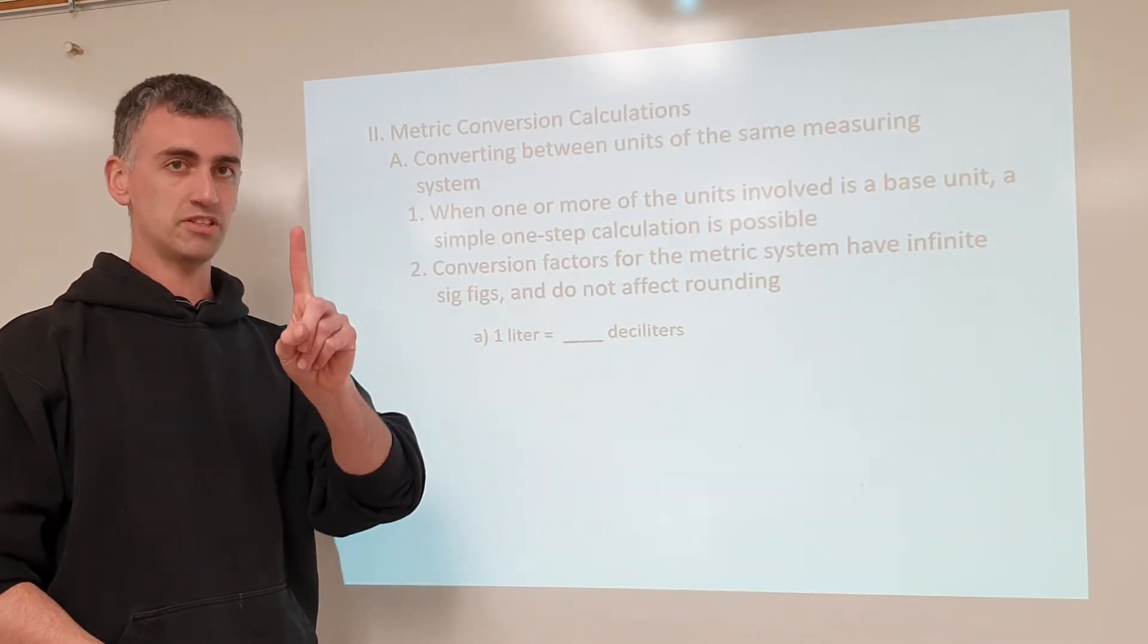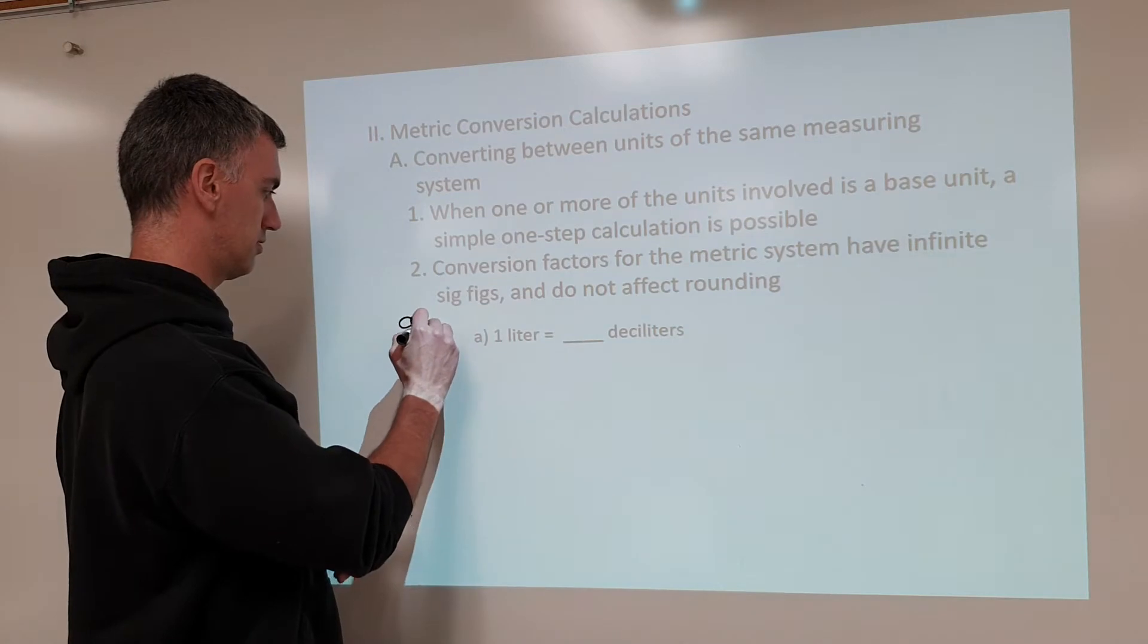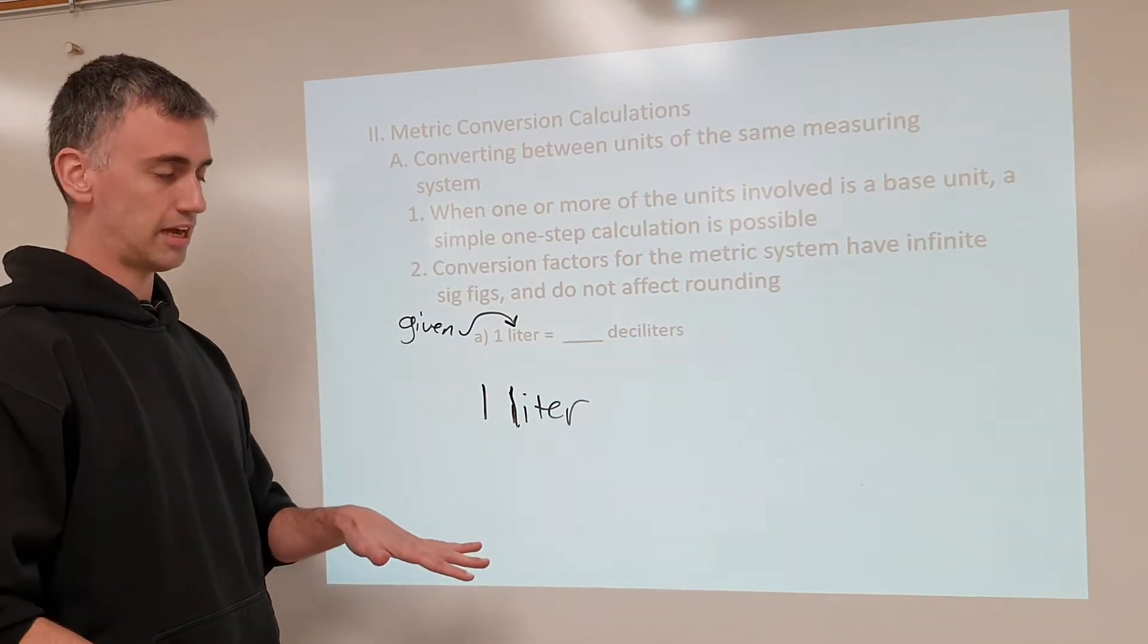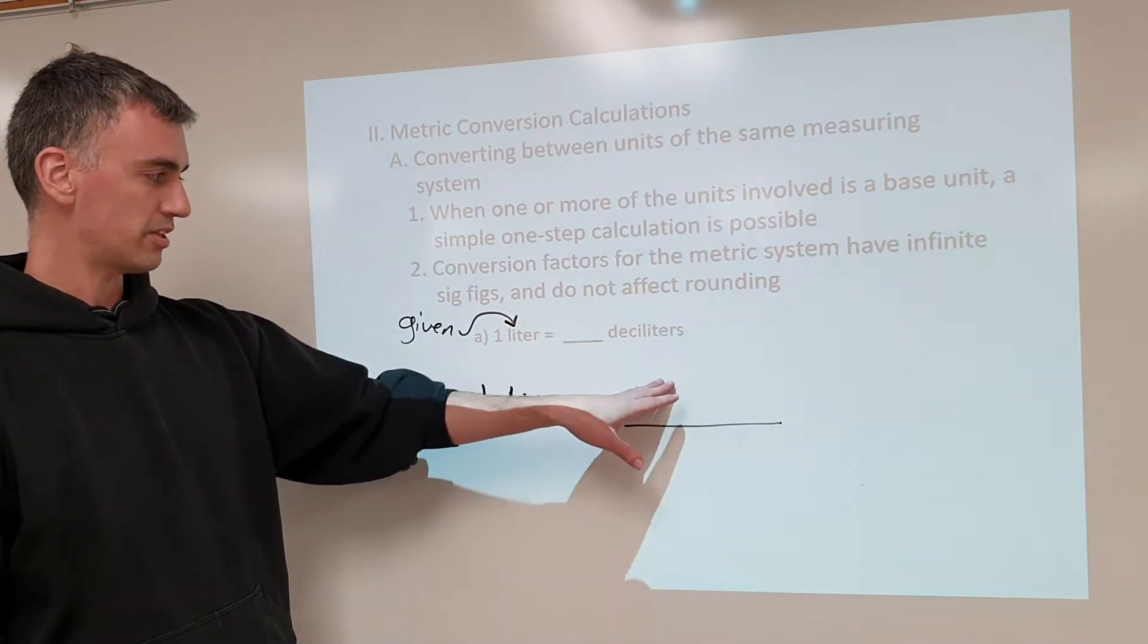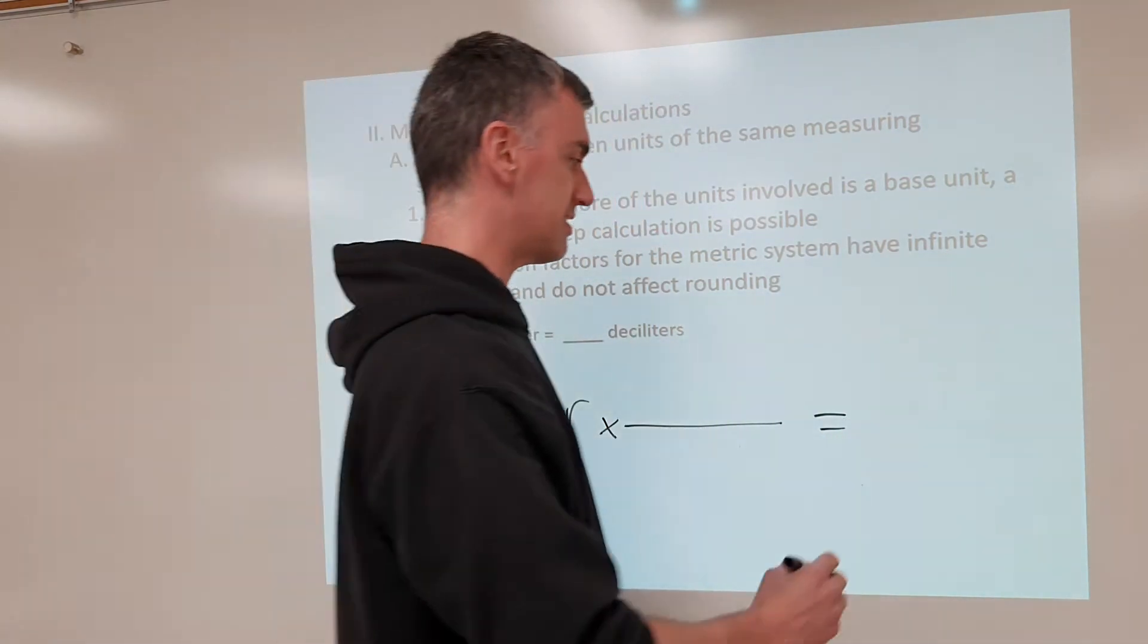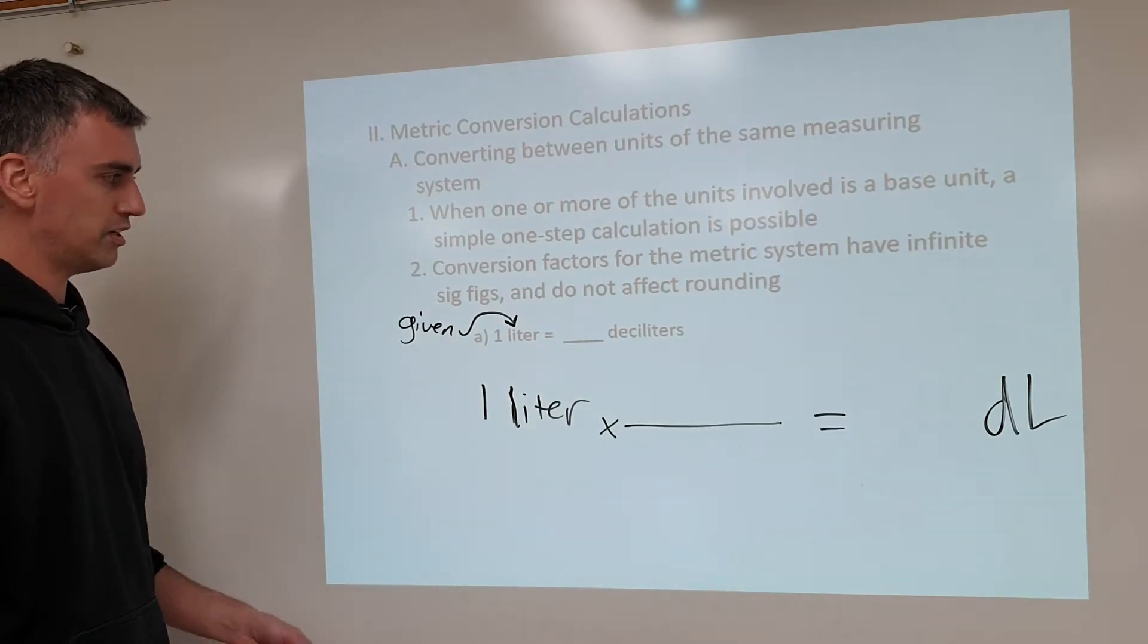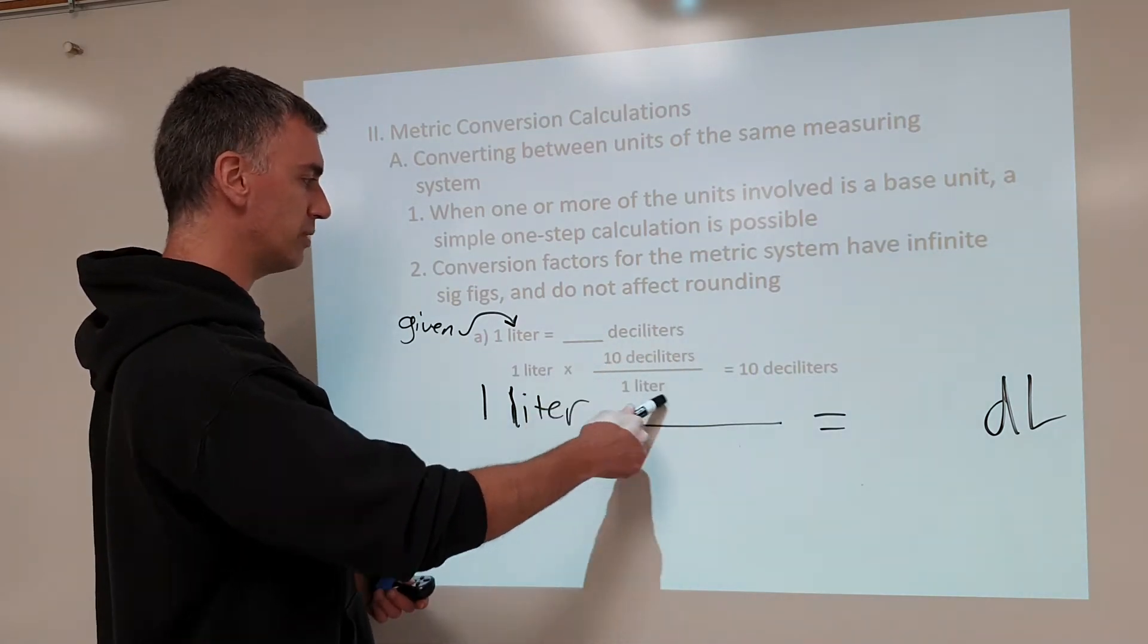And the first step you do, the first thing you do when converting from one thing to another, is you write down the given. I.e. this thing that you start with. One liter. You write that down before you do anything else. After that, you set up a conversion factor. A conversion factor looks like a fraction. And that fraction has something on top and something on bottom. And when you're done with this conversion factor, you're going to need to wind up with an answer in deciliters. This is the standard abbreviation for deciliters. D for decil, L for liters. So, how is this going to go? Well, we need to understand something. Why does this look like this? Why do we have a fraction with things on top and things on bottom?